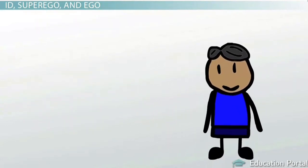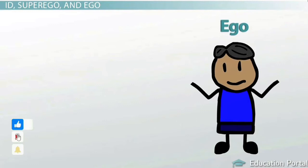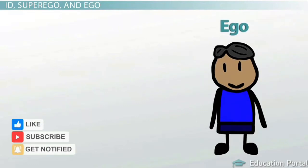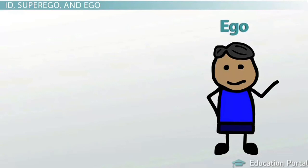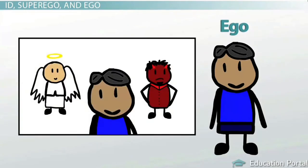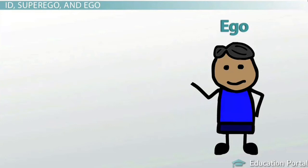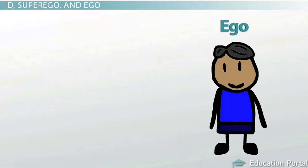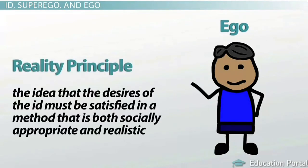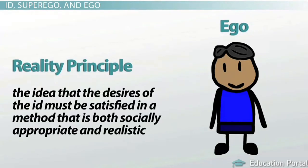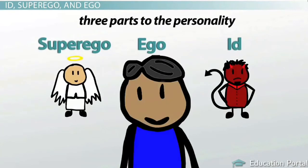Finally, we have the ego. The ego operates in your pre-conscious and conscious mind. The ego is the part of the personality that makes your decisions. This is like the cartoon character in the example — the ego is in the middle, makes the decision, and faces the consequences. The ego operates according to the reality principle, which is the idea that the desires of the id must be satisfied in a method that is both socially appropriate and realistic. The ego must mediate the demands of the id, the superego, and reality.